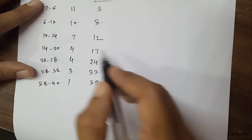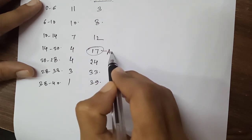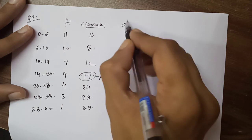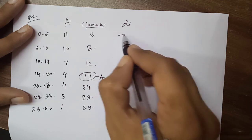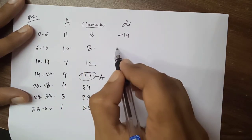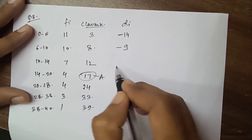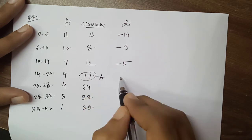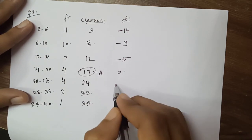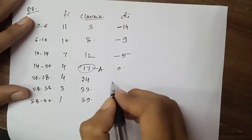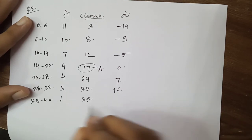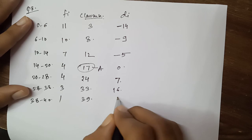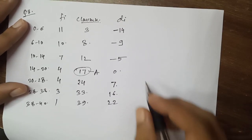The middle-most value among the class marks is 17, so we take 17 as the assumed mean. Now we calculate deviations di: 3 − 17 = −14, 8 − 17 = −9, 12 − 17 = −5, 17 − 17 = 0, 24 − 17 = 7, 33 − 17 = 16, 39 − 17 = 22.